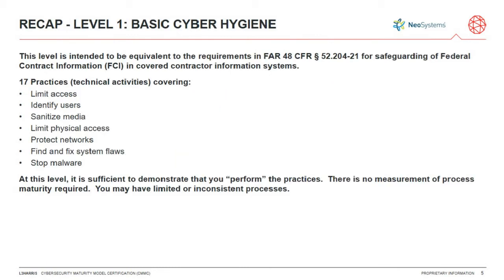Level one is the simplest — 17 individual practices, mainly about protecting contract information. If your contract has FCI or the FAR clause in it, data that has never been given to the public is considered private. You need to identify who can access it, limit their access, sanitize media when you're done with it. The important takeaway is that level one doesn't require documentation, and practices don't need to be done exactly the same way every time. With 17 practices, no documentation, and not very much maturity, this is a pretty low bar for most of this audience.